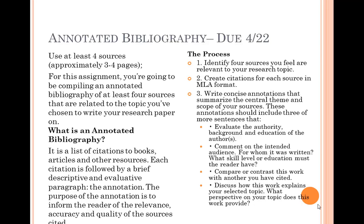These annotations should include three or more sentences that evaluate the authority, background, and education of the author — what have they done to prove their ethos, to show they're educated in the field they're speaking about? Maybe they've written other books. You should comment on the intended audience: for whom was it written, and what skill level or education must a reader have? You also want to compare or contrast this work with others you've cited, and discuss how this work explains your selected topic and what perspective it provides.